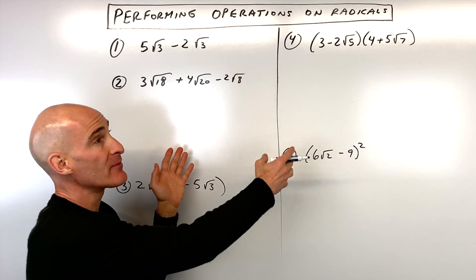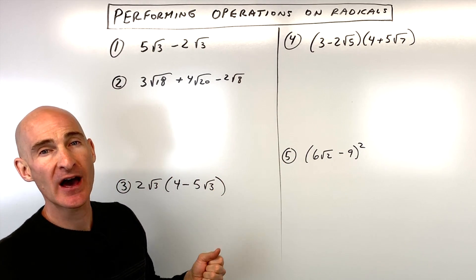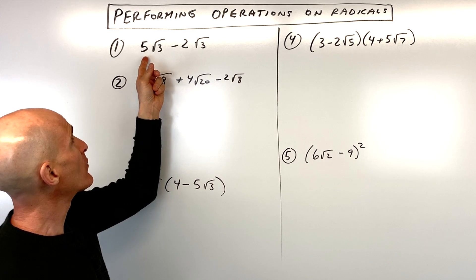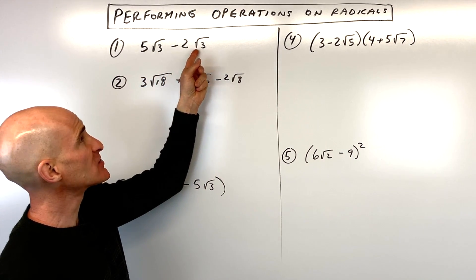Okay, we're going to work through these five problems involving radicals, and I'm going to show you how to handle these problems. So, number one, we've got five square root of three minus two square root of three.